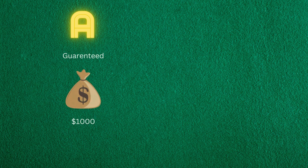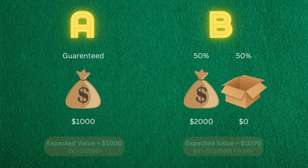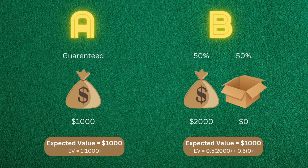This is why people often take more risks to avoid losses than to pursue gains. Imagine you have a choice between two options: Option A, a guaranteed win of one thousand dollars, and Option B, a 50% chance of winning two thousand dollars and a 50% chance of winning nothing. Most people will choose Option A as it's a guaranteed win. So far, nothing strange.